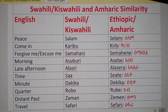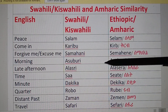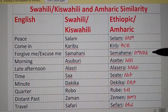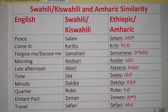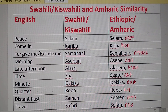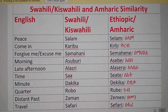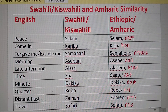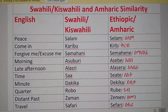The next word is 'morning.' In Swahili it is 'Asuburi.' In Amharic, a close word is 'Asaba,' which means 'thinking.' In the morning when you wake up, you think about what you're going to do — you start your process for the day. So 'Asuburi' and 'Asaba' seem to come from a similar common root word.